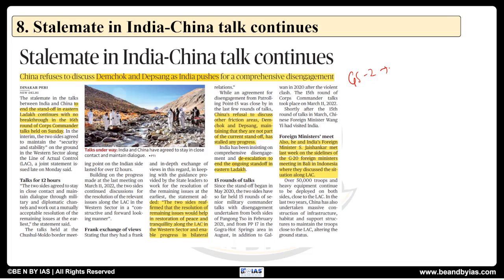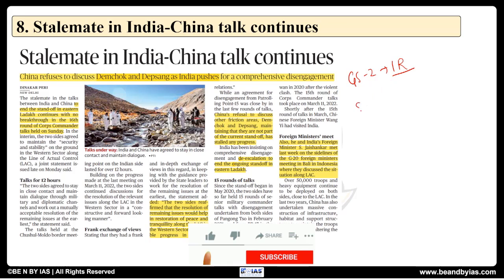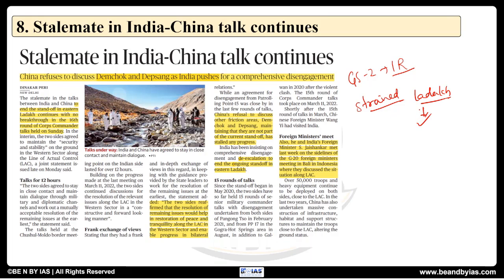The eighth article covers the stalemate in India-China talks. This is useful for GS Paper 2, particularly international relations. There is a standoff in Ladakh, with talks ongoing to de-escalate the region and restore good relations. So far there have been almost 15 rounds of talks. On the sidelines of the G20 Foreign Ministers' meeting, both sides also met and discussed issues along the LAC — Line of Actual Control.